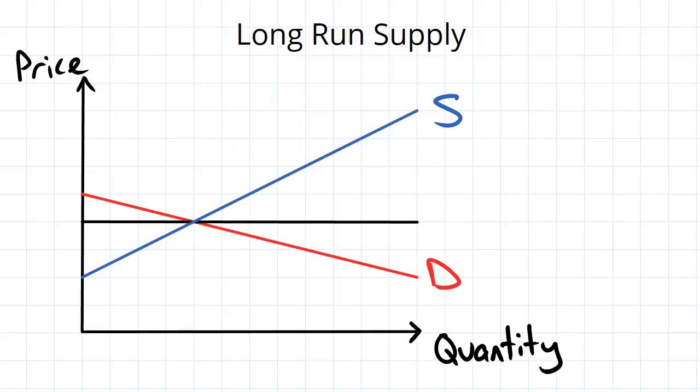So imagine we've got supply and demand as shown. Now the supply curve given is a fairly typical one that we've seen many times up until now, and it is actually a short-run supply curve.